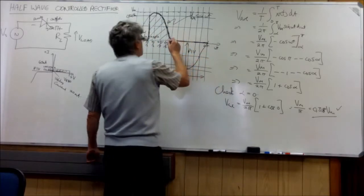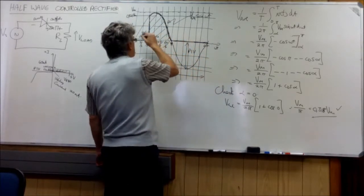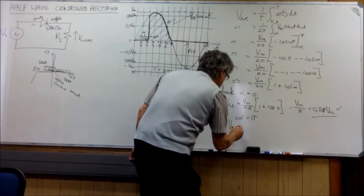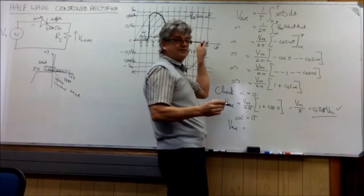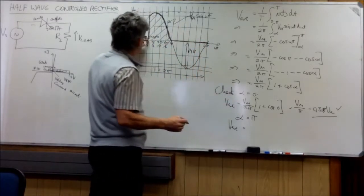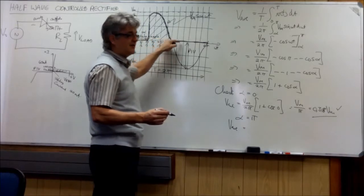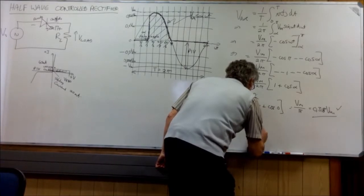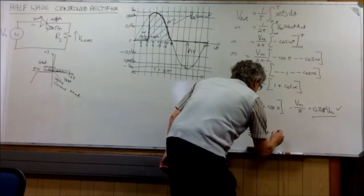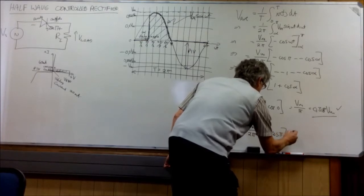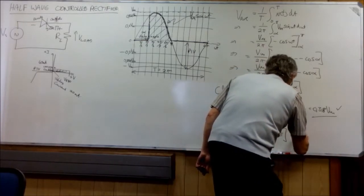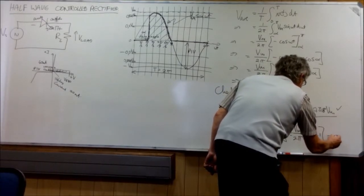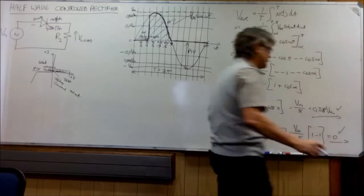Now we go to the other extreme. The other extreme means alpha is equal to pi. So we say alpha is equal to pi. So now we know the answer must be zero. Because there will be zero from pi. And then zero from pi to two pi. So it's v max over two pi. And we get one plus the cos of pi. And that is equal to v max over two pi. And it is one minus one. Which is zero. So that's correct. Both of them are correct. Our formula looks okay.